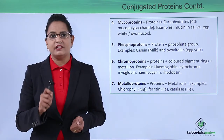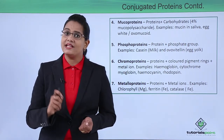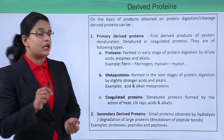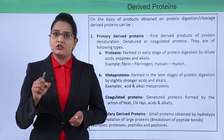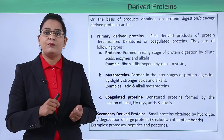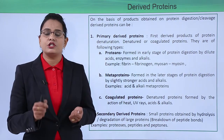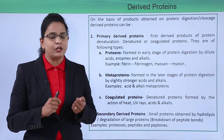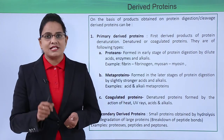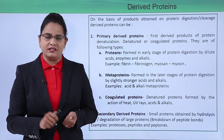Next are derived proteins. Derived proteins are parts of proteins — they are obtained by denaturation or breaking of the peptide bonds. They can be classified into two categories: primary derived and secondary derived.